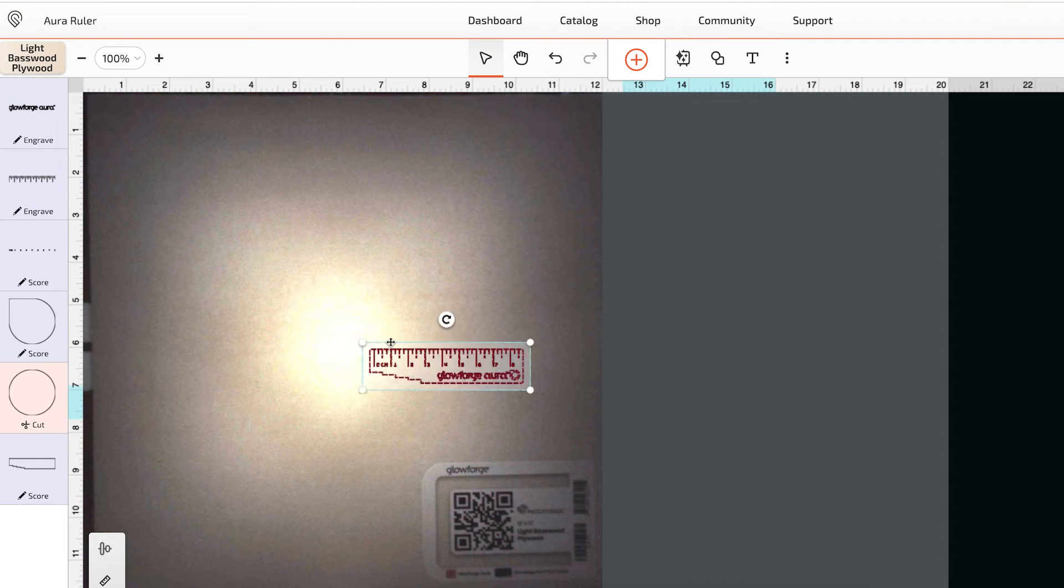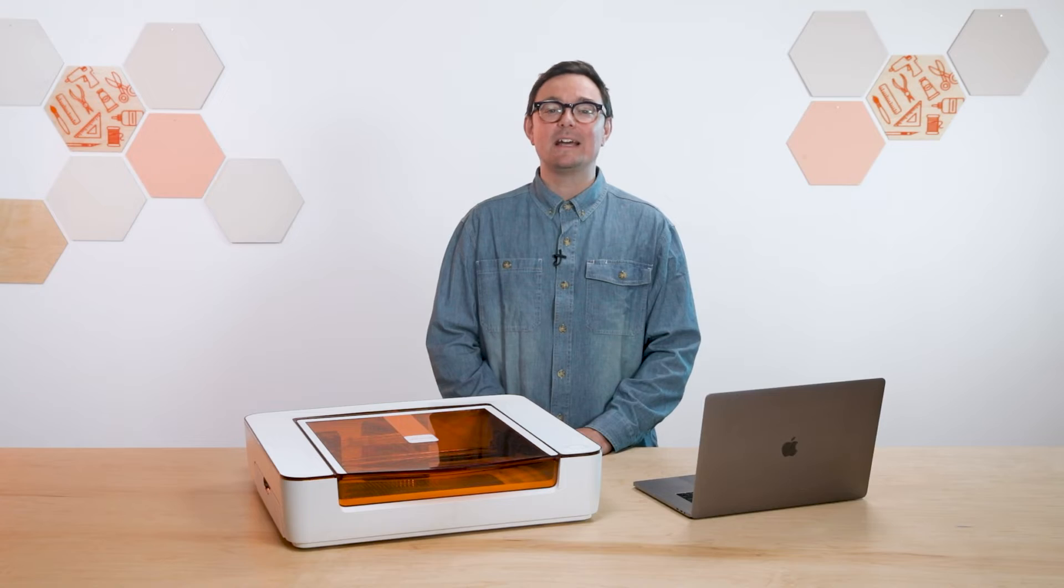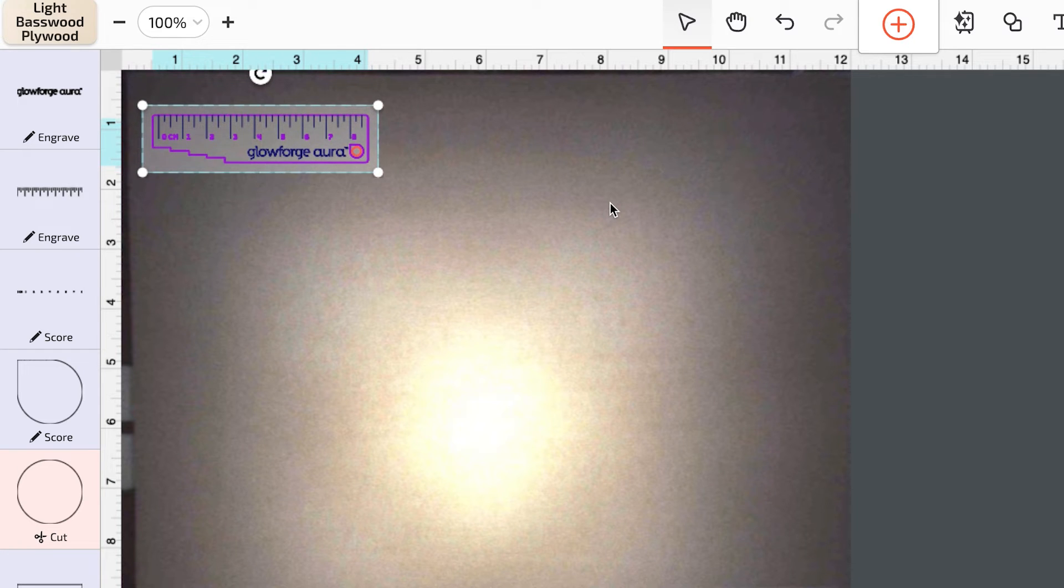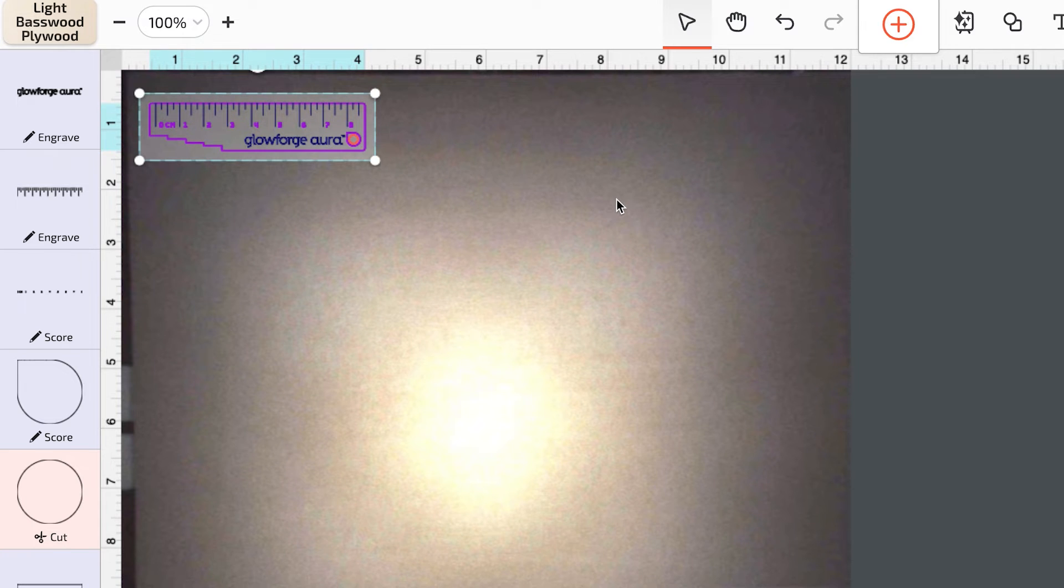Now let's place your design on the material. Use the select tool to drag and drop it wherever you want. To get the most out of every sheet I typically start in the top corner. That leaves the rest of the sheet open for another project later on. To get really exact you can simply nudge it up and down left and right using your arrow keys.